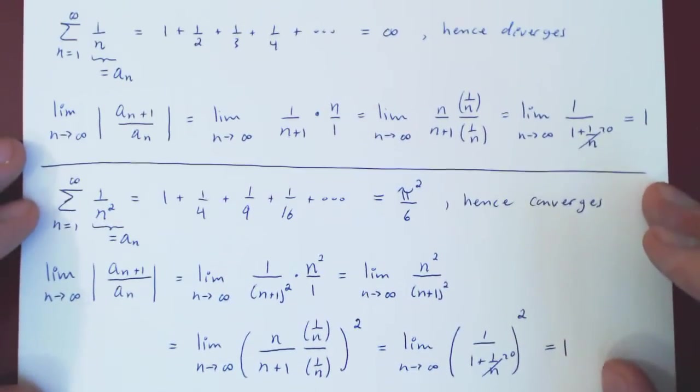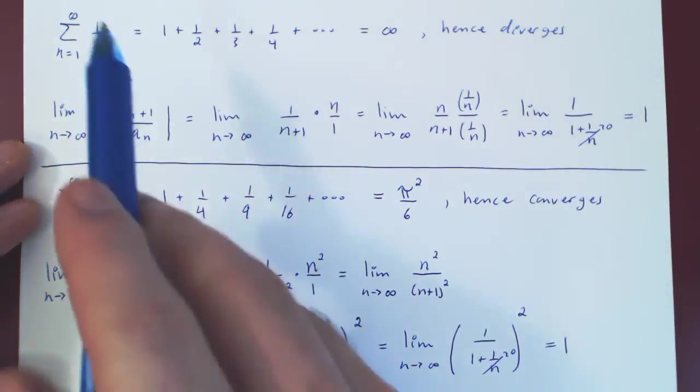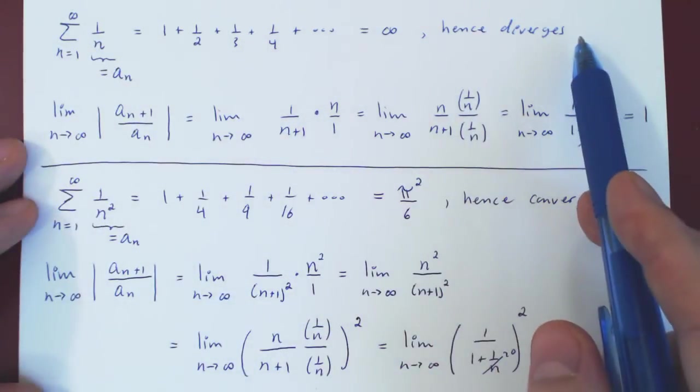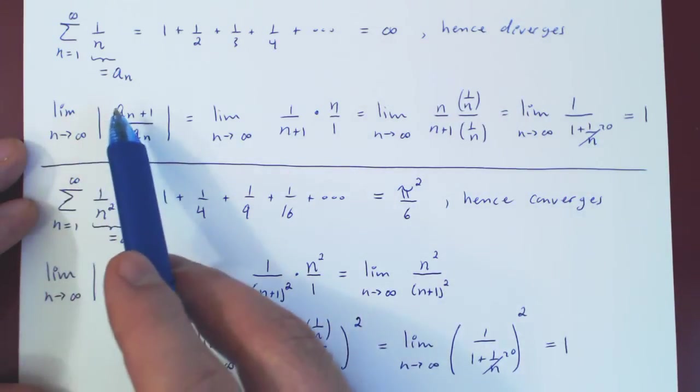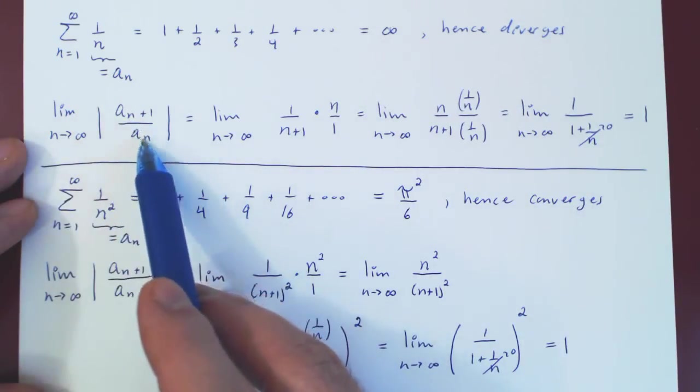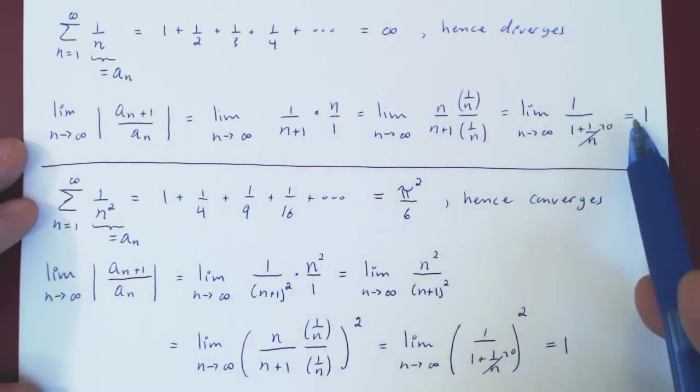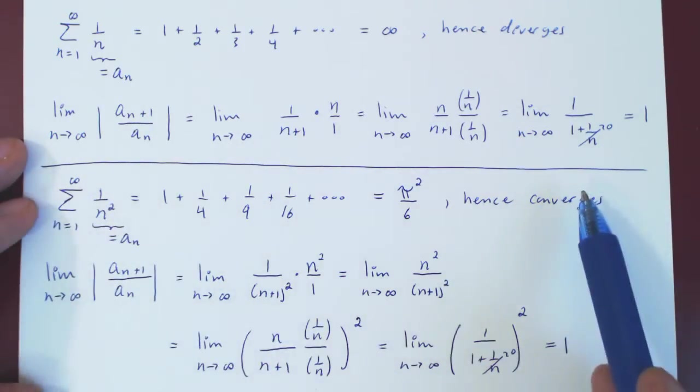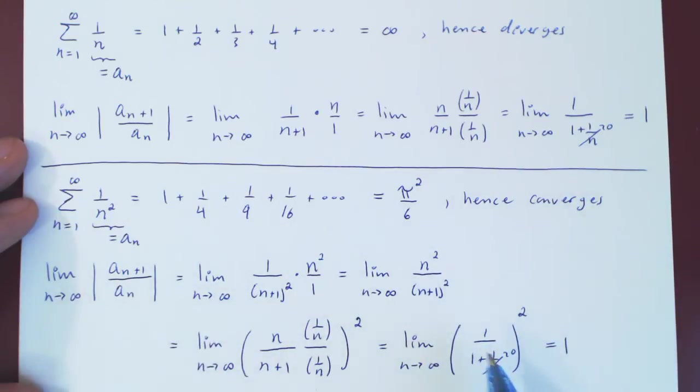And now this completes the proof. You see, here's one example of a P-series which diverges, and the limit as n tends to infinity of a_{n+1} over a_n in absolute value is equal to 1. Here's another P-series which now converges, and the limit is also equal to 1.